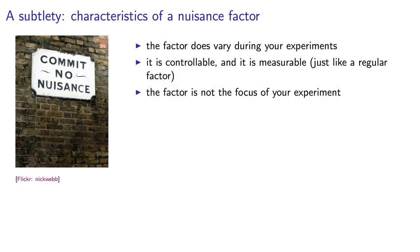Now here's the subtle distinction. What if you had a factor you can control? It varies during the experiments, but the factor isn't actually the main focus of your experiment. These are called nuisance factors.